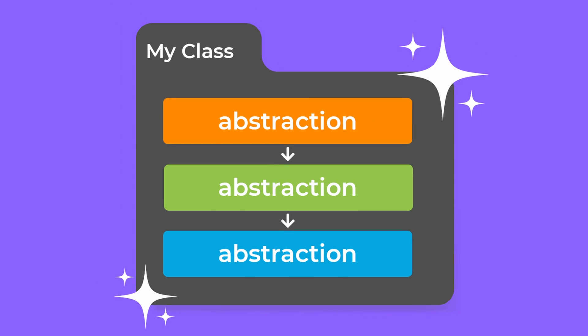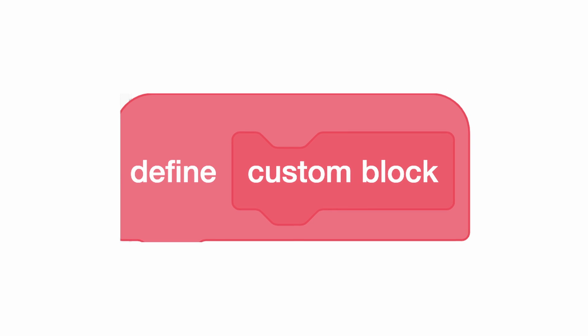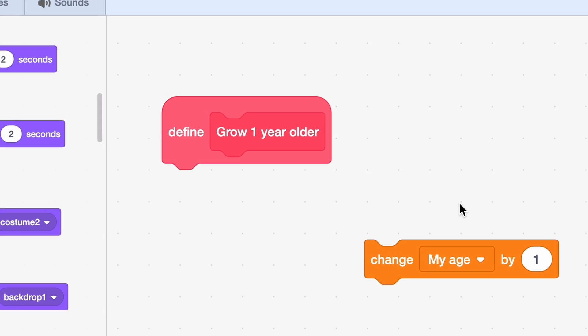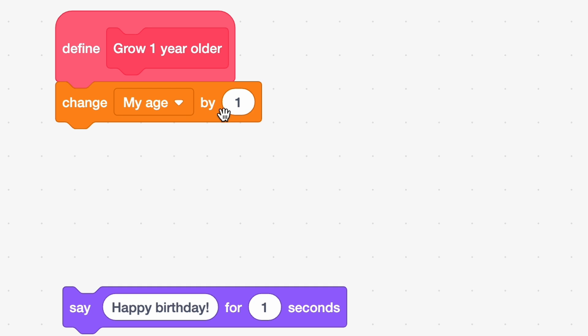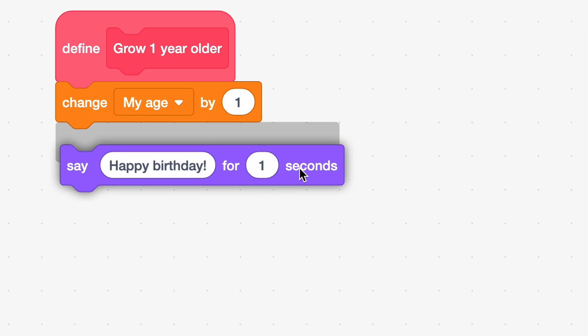Well, this is where abstraction plays a role, which is represented by custom blocks. In Scratch, there are custom blocks, which empower you to create your own blocks by combining several blocks of code into one.